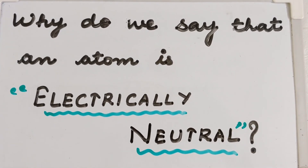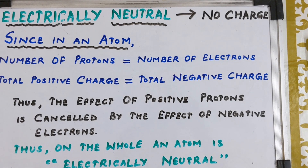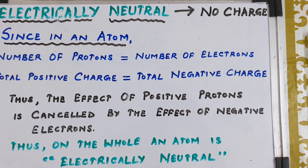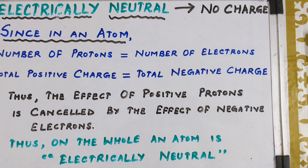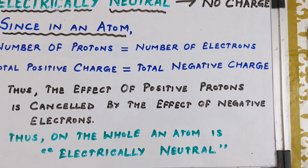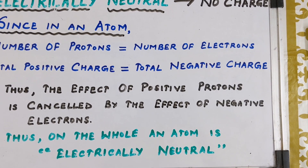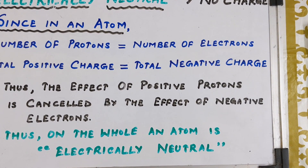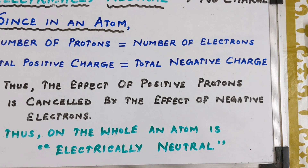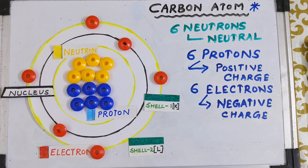Why do we say that an atom is electrically neutral? Electrically neutral means carrying no charge. In any atom, the number of protons is always equal to the number of electrons. The total positive charge on all the protons is always equal to the total negative charge on all the electrons, and thus the effect of positive charge of the protons is cancelled by the effect of negative charge of the electrons. Thus on the whole, an atom is electrically neutral.